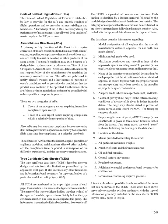ADs may be a one-time compliance item or a recurring item requiring future inspection on an hourly basis, accrued flight time since last compliance, or a calendar time basis. The contents of ADs include the aircraft, engine, propeller, or appliance model and serial numbers affected, the compliance time or period, a description of the difficulty experienced, and the necessary corrective action.